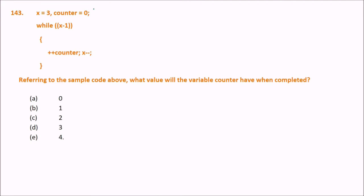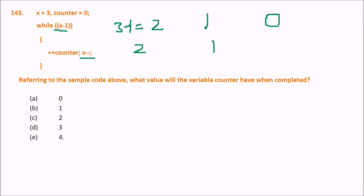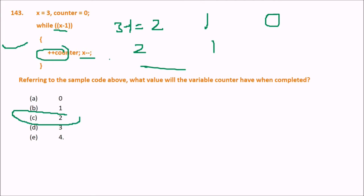Next: x equals 3, counter equals 0. In the while loop, x minus 1 is evaluated and counter is incremented while x is decremented. x starts at 3: 3 minus 1 is 2, then 2 minus 1 is 1, then 1 minus 1 is 0 — loop exits. The loop runs 2 times, so counter will have the value 2.